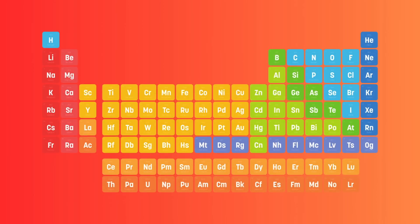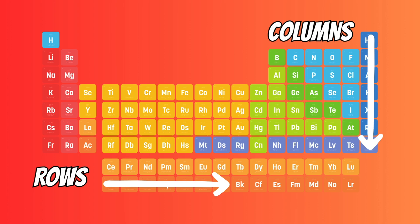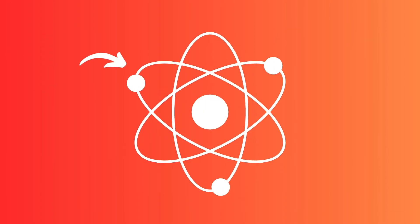Now, the table is split into rows and columns. The rows are better known as periods, and they show elements with the same number of electron shells. Electron shells are those rings that you see outside of an atom when you look at a picture. They're what hold the electrons.